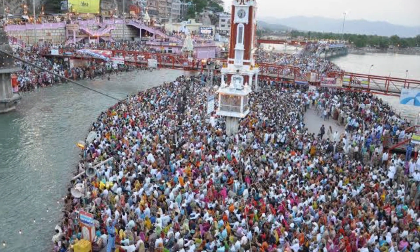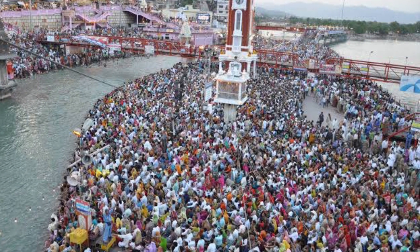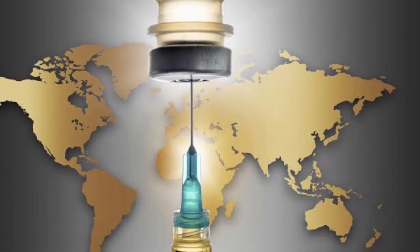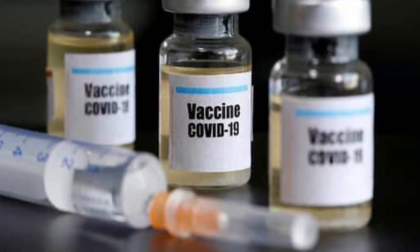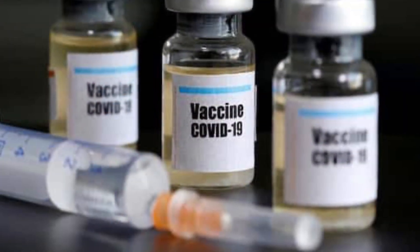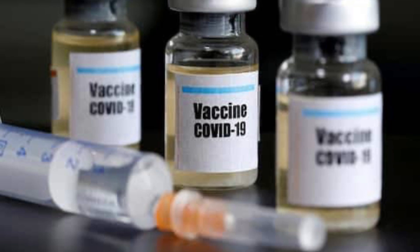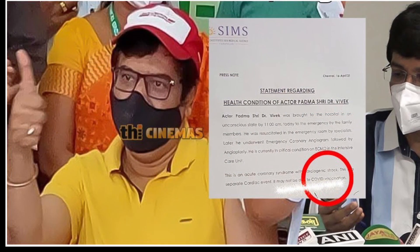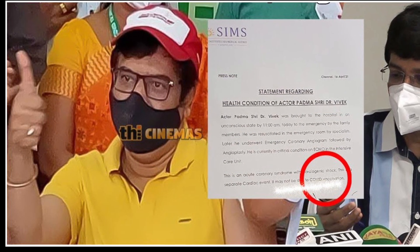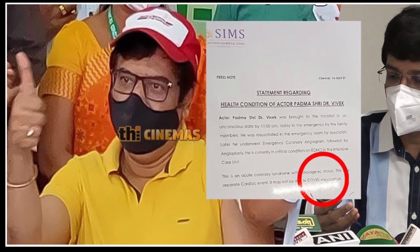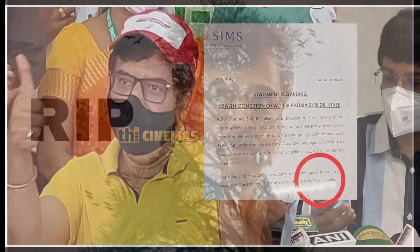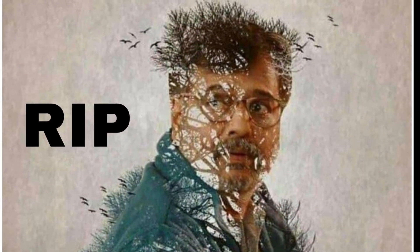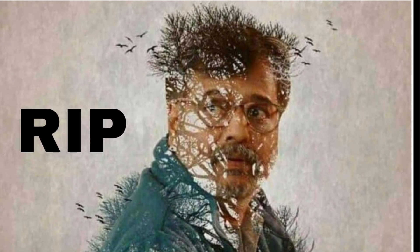Legendary actor Vivek, who had received COVID vaccination about two days before, passed away due to coronary artery disease — a block in one of his coronary arteries resulting in myocardial infarction and cardiogenic shock. It is not due to COVID vaccination. Please don't spread or support these rumors. He was a legendary actor and comedian who planted 33 lakh trees in his life.